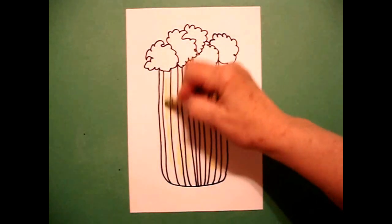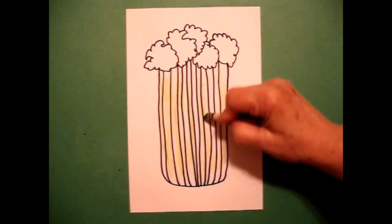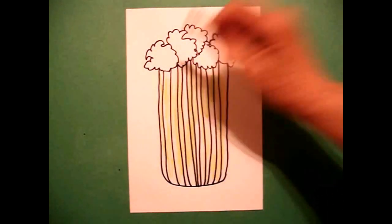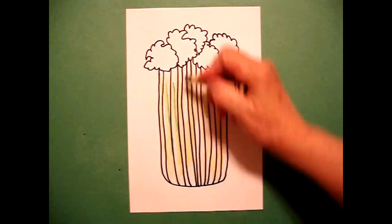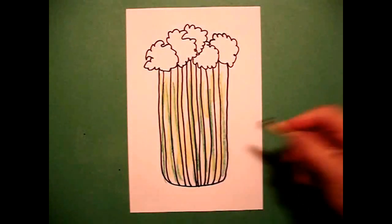Now I'm coming in with the next darker green. And I'm just going over everything I already did with the lighter green. And then I come back in with my dark, dark green, and I just draw some straight dark green lines.